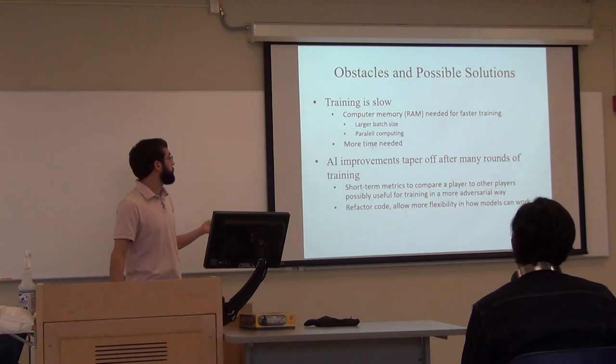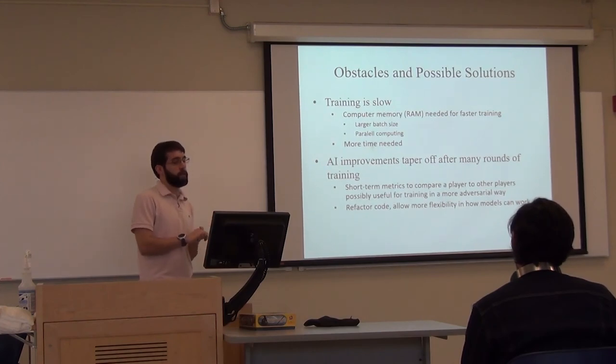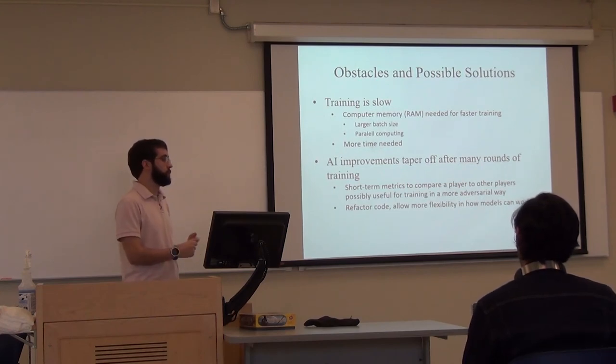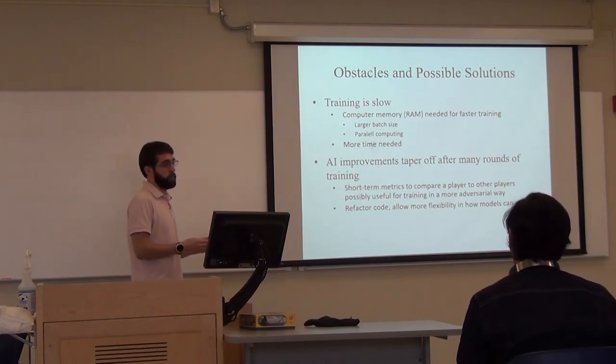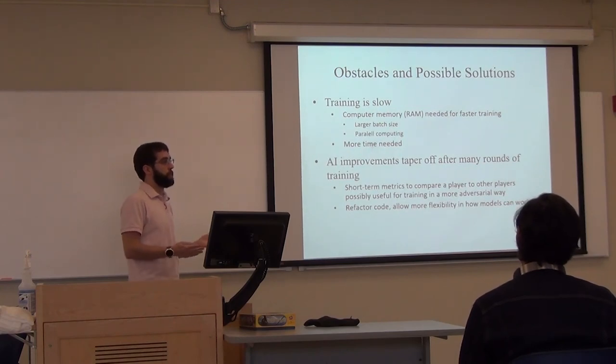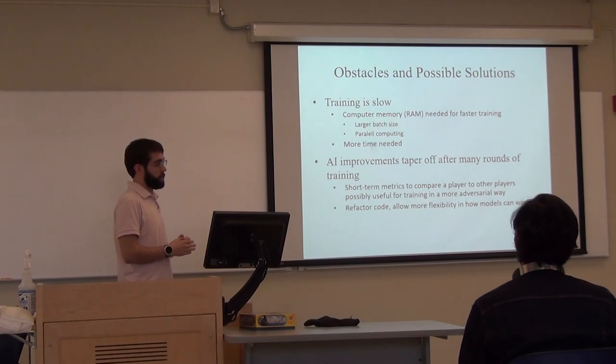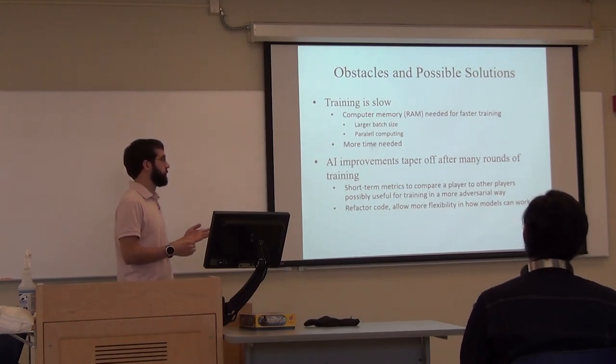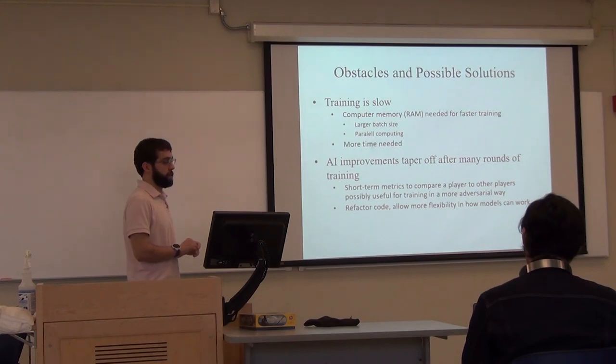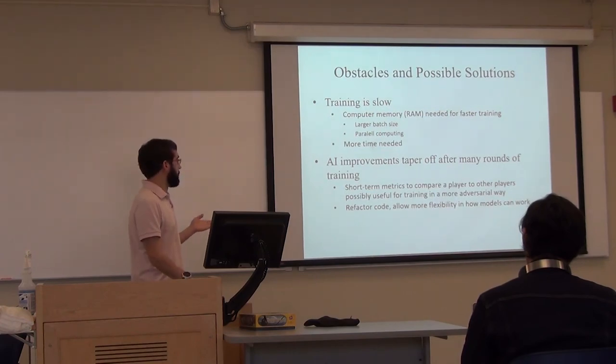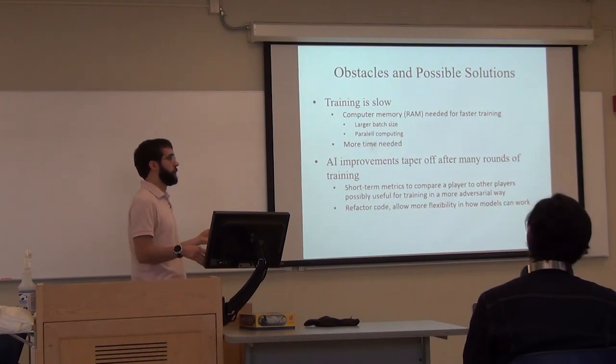Currently not 100% done with this, but I've started evaluating different obstacles that I came across and some possible solutions. One of the big problems with this is that training is really slow. The neural network algorithm trains really quickly. The big problem is that the simulations themselves take a long time. It's about 8 to 10 seconds per game. If I want to do a lot of training, I can get about 300 to 400 games per hour, which is not a lot when you need thousands of these to get a good idea of a model.